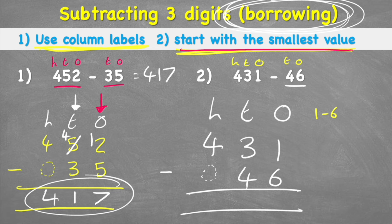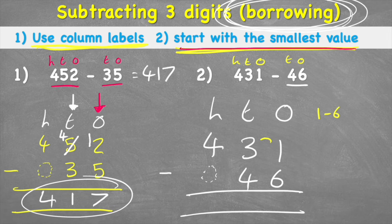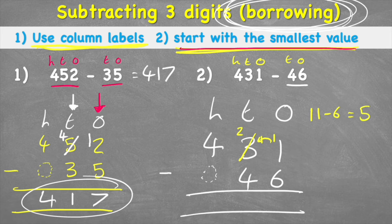The first question says one subtract six. I can't take six away from one, so I look next door at the tens. I bring the three down to a two and borrow the one, turning the one in the ones column into eleven. Now my question says eleven subtract six, which equals five — so five is the answer to the ones column.